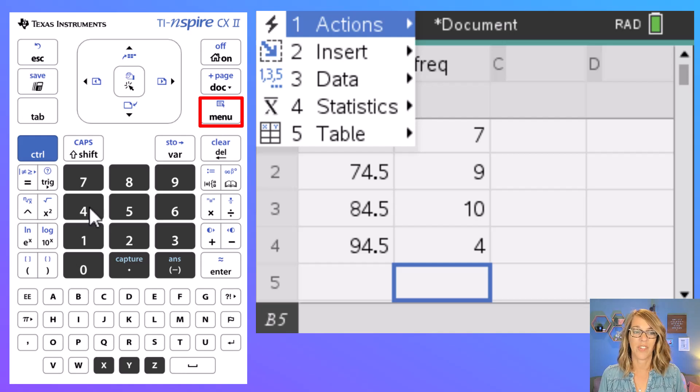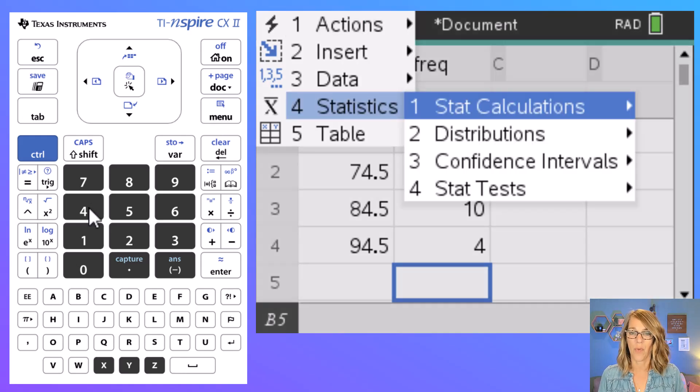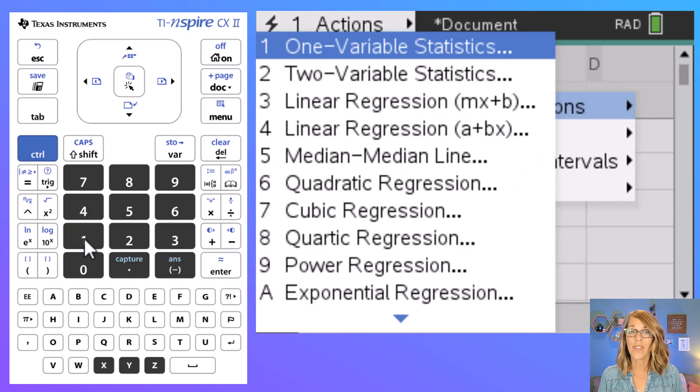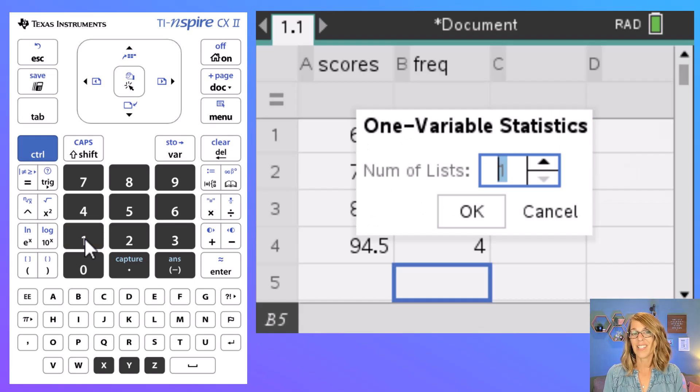I want statistics which is number four so I'm going to choose four. I do want stat calculation so I hit one and then one variable statistics so I hit one again. It asks me for the number of lists and by lists it means variables. We really just have a single variable here and those are the exam scores. So I'm going to leave the number of lists at one and I'm going to just hit enter.